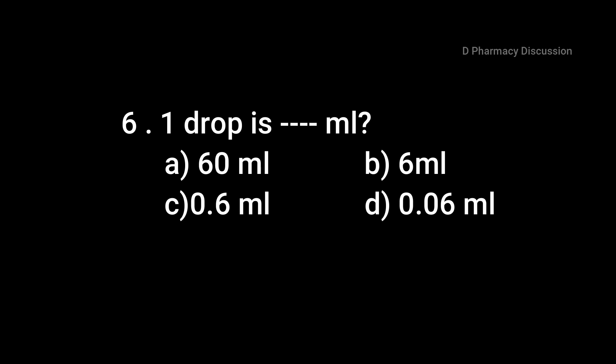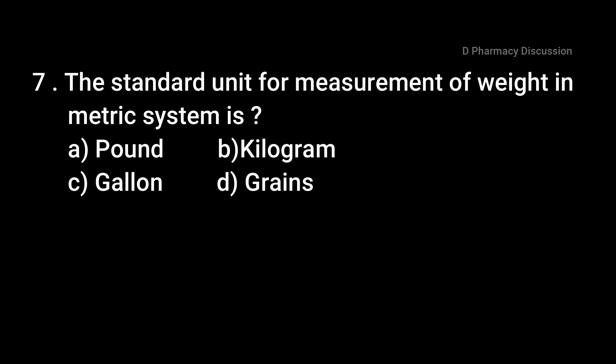Question 6: One minim equals dash ml. Option A: 60 ml, B: 6 ml, C: 0.6 ml, and Option D: 0.06 ml. Correct answer is Option D, that is 0.06 ml.